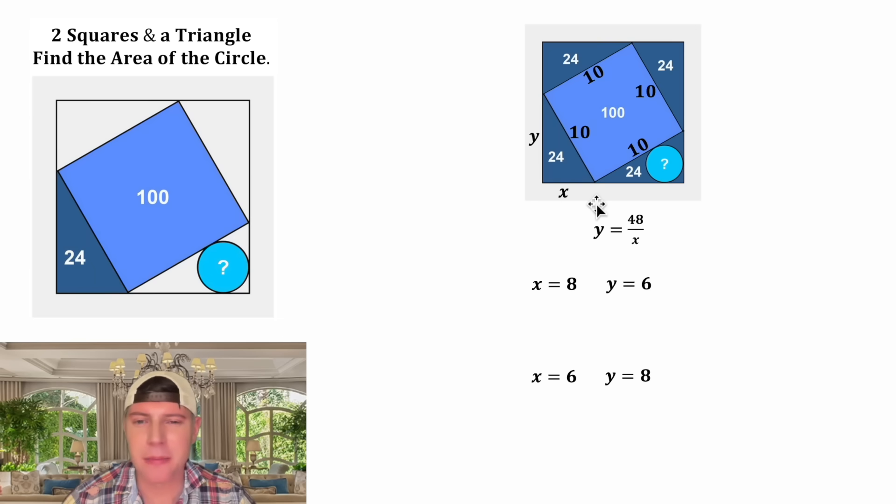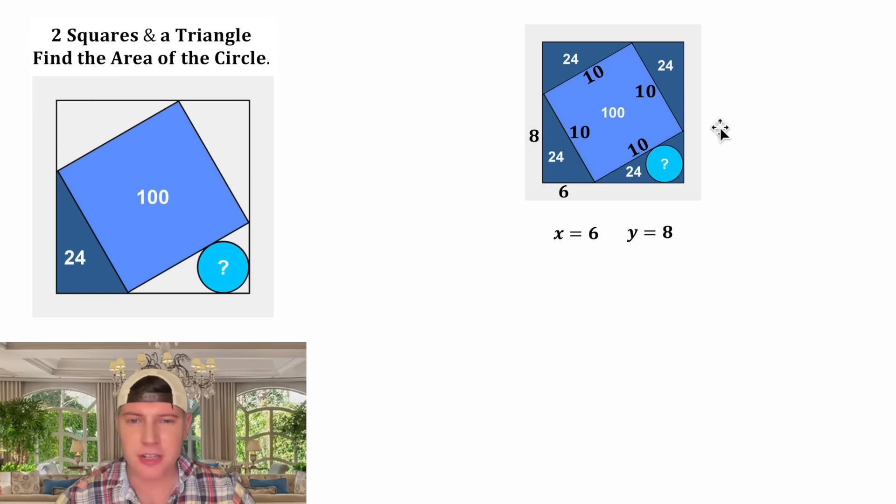And looking up here, earlier I made an assumption that x is less than y. So this scenario will not work out. So we now have x and y. In the place of the x let's plug in 6, and in the place of the y let's plug in 8. And then since this triangle is congruent to this triangle, this side is also 6 and this side is also 8.